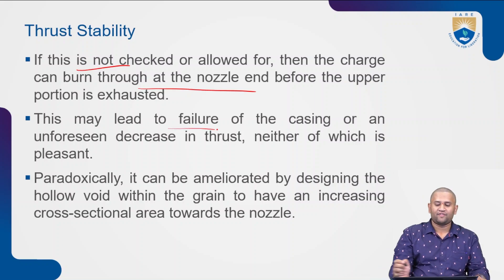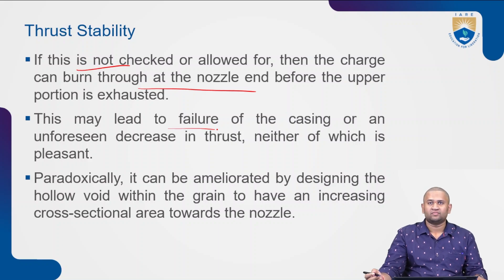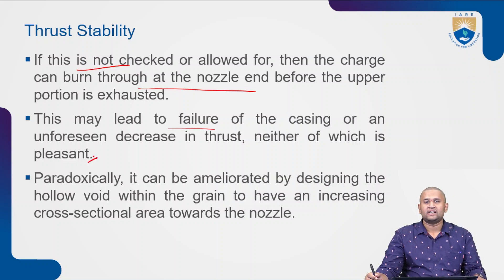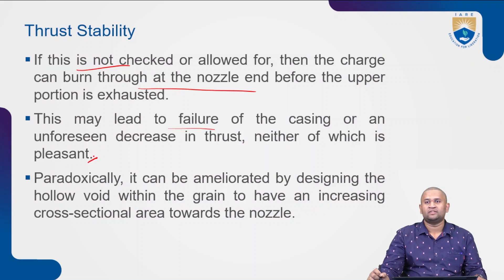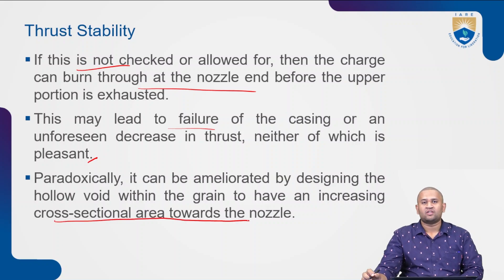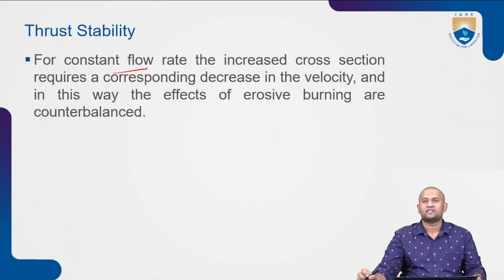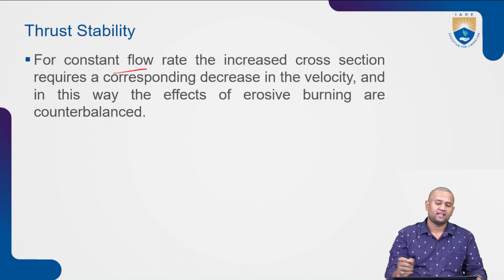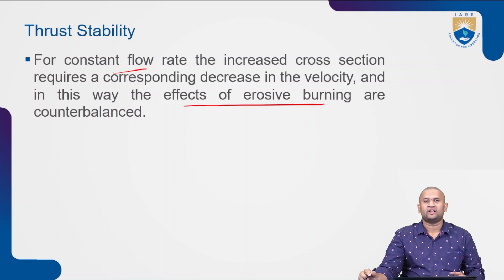If erosive burning is not checked or accounted for, the charge can burn through the nozzle end before the upper portion is exhausted, potentially leading to failure of the casing or an unforeseen decrease in thrust. Paradoxically, this is ameliorated by designing the hollow void within the grain to have an increasing cross-sectional area towards the nozzle. For a partial flow rate, the increased cross-section requires a corresponding decrease in velocity, and in this way erosive burning effects are counterbalanced.